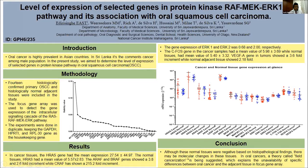We would like to conclude that even though those tissues were selected as histologically normal, there are genetic changes associated with them. We can conclude — even though this is part of a larger study — that this represents the field cancerization effect. Even in histologically normal tissue, genetic changes can exist in tumor-free areas, and that could be one of the reasons for recurrence after surgical excision in these patients.